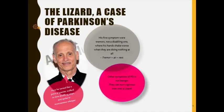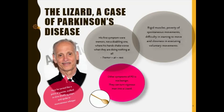The other symptoms of Parkinson's disease are not quite so benign. They can change a vigorous man into a lizard. These include rigid muscles, a marked poverty of spontaneous movements — he could no longer make sudden movements — difficulty in starting to move, and slowness in executing voluntary movements once initiated.